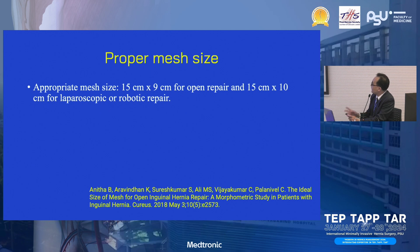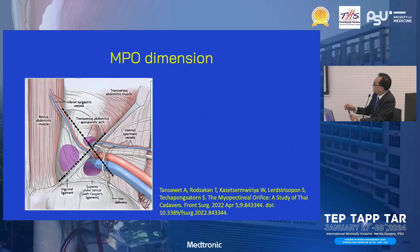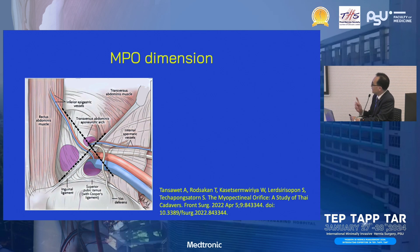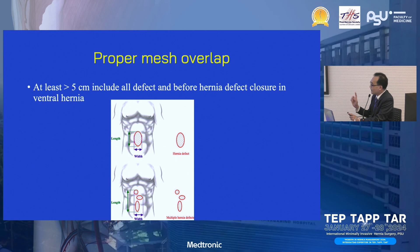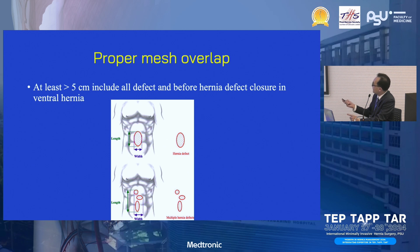For appropriate mesh size in inguinal hernia, we usually use the numbers reported in the literature: 15 by 9 cm for open hernia repair, and 15 by 10 cm for laparoscopic or robotic inguinal hernia repair. In our study on Thai patients, we measured the myopectineal orifice (MPO) dimensions and found that 15 by 10 cm is sufficient to cover the MPO in Thais. For mesh overlap, I recommend using more than 5 cm to cover the hernia defect.